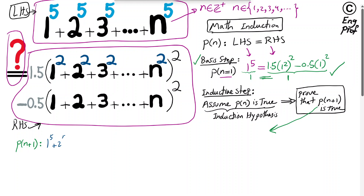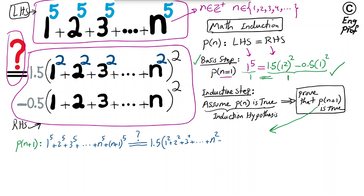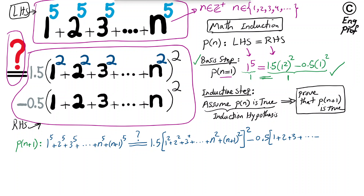The right-hand side of P(n+1) is 1.5 times (1² + 2² + 3² + ... + n² + (n+1)²) squared, minus 0.5 times (1 + 2 + 3 + ... + n + (n+1)) squared.